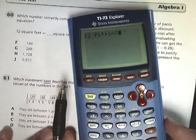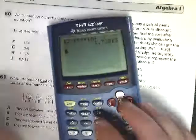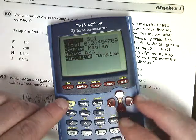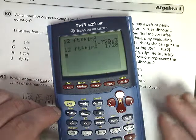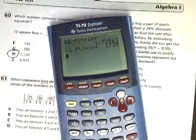So I'm going to hit enter, it looks like this, it gives me 1.78 times e to the 5th, and that's because I'm in scientific notation mode. Let me switch out of that. 1728. So the answer to number 60 is H.